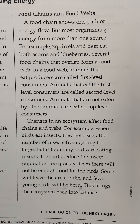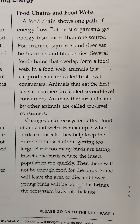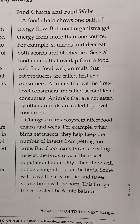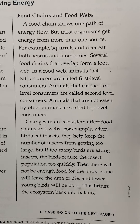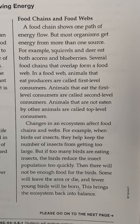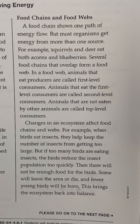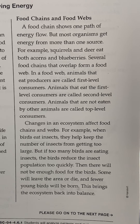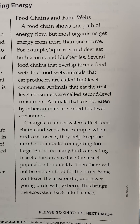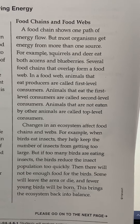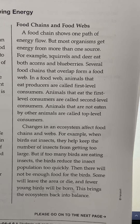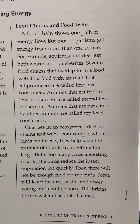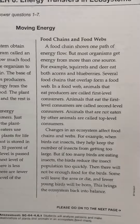Changes in an ecosystem affect food chains and food webs. For example, when birds eat insects they help keep the number of insects from getting too large. But if too many birds are eating insects, the birds reduce the insect population too quickly — then there will not be enough food for the birds. Some will leave the area or die, and few young birds will be born. This brings the ecosystem back into balance.